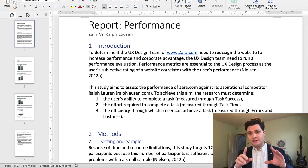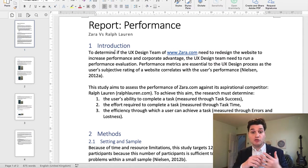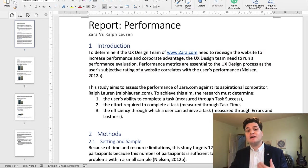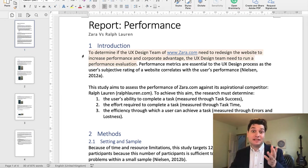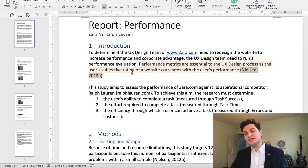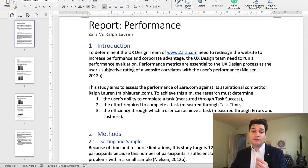If you've not seen the actual analysis I've done, I believe it's the previous video to this where I go through comparing Zara to Ralph Lauren. So I'll start with a quick introduction which gives me the problem I'm trying to solve. So to determine if the UX design team of Zara.com need to redesign the website to increase performance and corporate advantage, the UX design team need to run performance evaluation. So, long sentence, okay, but it gets to the point. You know what this is about. Performance metrics are essential to the UX design process as the user's subjective rating of websites correlates with the user's performance. So, there we have why this problem is important. So we're saying we're doing it and we're saying why it's important.